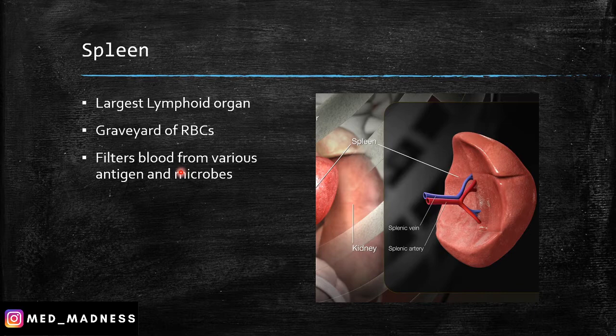If you take the lymphoid organs like lymph nodes, only the lymph comes in contact with the immune cells.